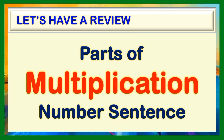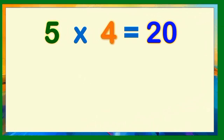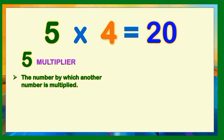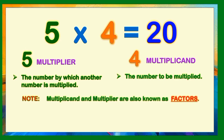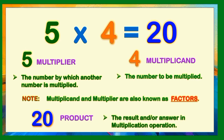Before we proceed to our online discussion, let's have a review on the parts of a multiplication number sentence. Let us have this number sentence: 5 times 4 is equal to 20, wherein 5 is what we call the multiplier, meaning the number by which another number is multiplied. The digit 4 is our multiplicand, meaning the number to be multiplied. Take note, children, multiplicand and multiplier are also known as factors. 20 here is our product, meaning the result and our answer in the multiplication operation.